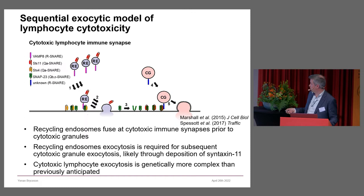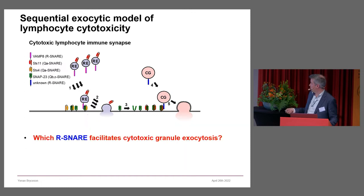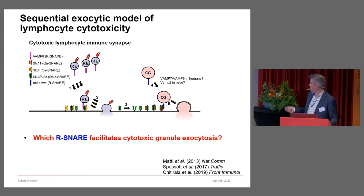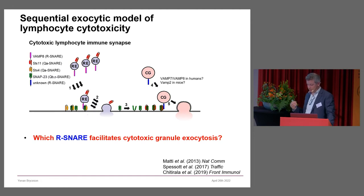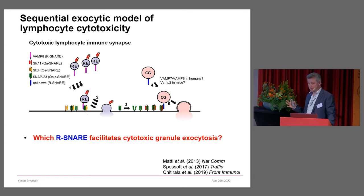Of course this didn't solve the problem of what the R-SNARE truly is for cytotoxic granule exocytosis. In mice, VAMP2 has been suggested, but VAMP2 does not seem to be expressed in human lymphocytes. VAMP7 and VAMP8 have been shown to, at least in part, mediate this process, but it's still unclear if there's one VAMP for this process or if there's some level of redundancy between VAMP7 and VAMP8.